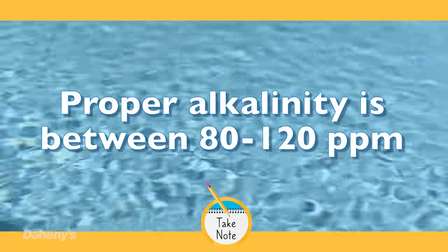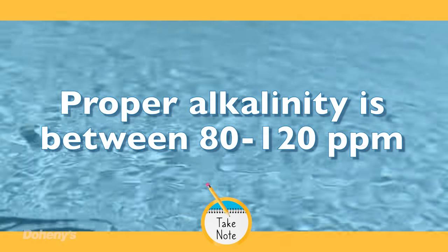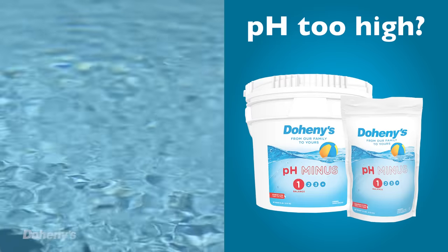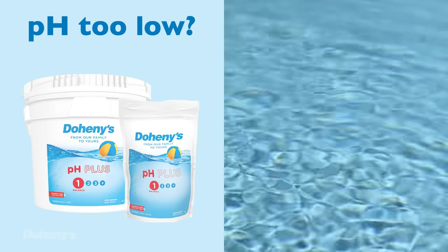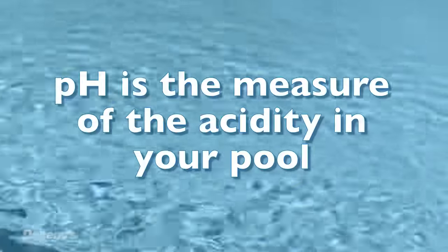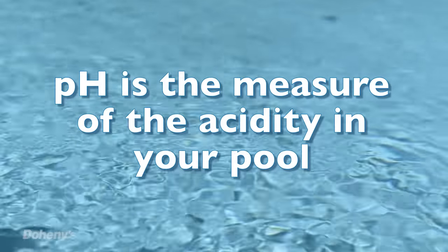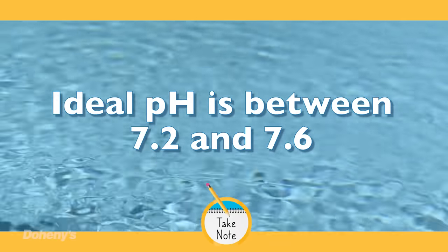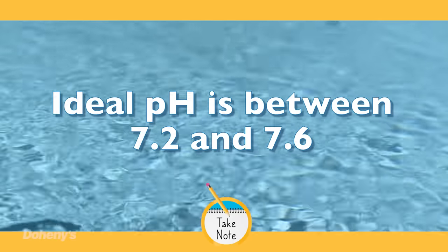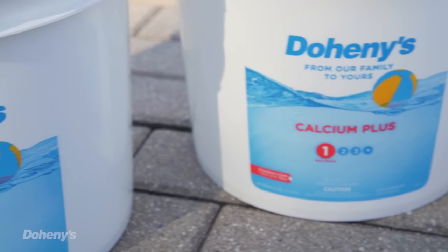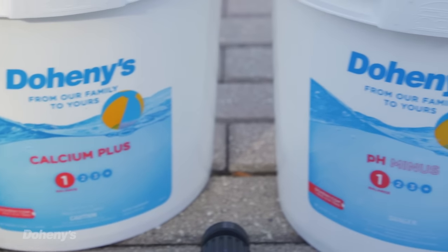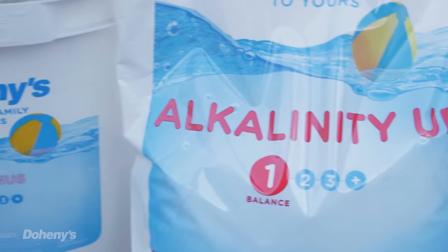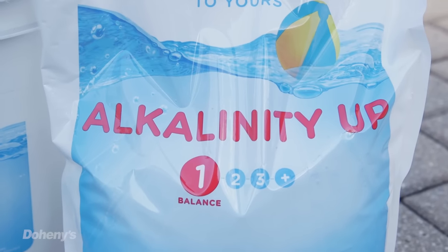Proper alkalinity is between 80 and 120 parts per million. If you find your alkalinity is too high, use Doheny's pH minus. If it is too low, add some Doheny's alkalinity plus. Now let's talk about the basics of pH. pH is the measure of the acidity in your pool. If it's too high or too low it can cause swimmer irritation and damage to your pool and equipment. Ideally you want a pH between 7.2 and 7.6. You can reduce your pH by adding Doheny's pH minus, and if it's too low, use Doheny's pH plus to bring it up.